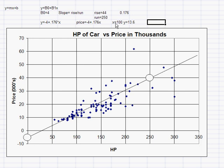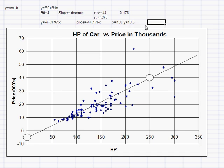The last thing we did was plug in 100 to our equation. If x equals 100, then y would be equal to about 13.6 according to our equation — meaning we would expect a car with 100 horsepower to cost about $13,600. And we can also talk about changes: adding one horsepower adds $176.